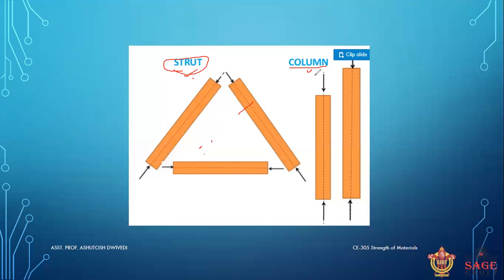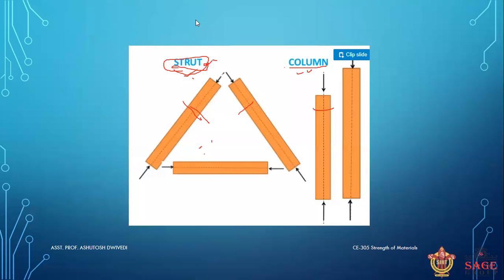The general difference between column and strut is that the cross-sectional area of a strut is small, whereas the cross-sectional dimension of a column is large. Struts are used in bridge trusses and roof trusses, while columns are used in concrete and steel buildings.